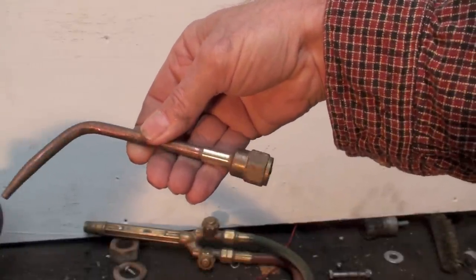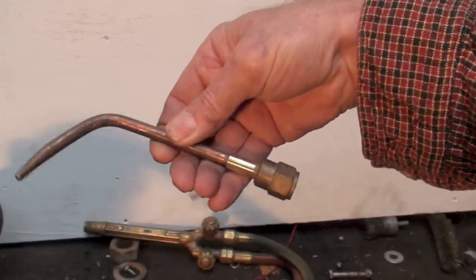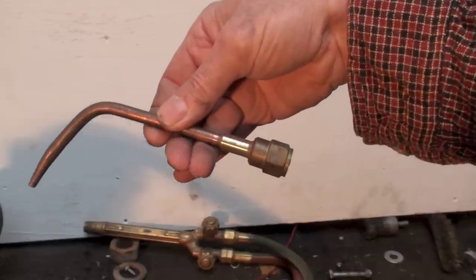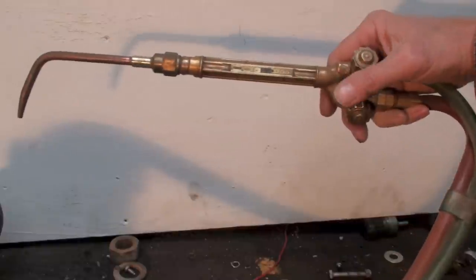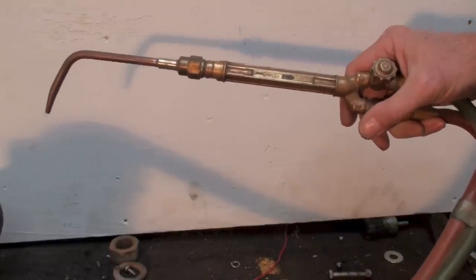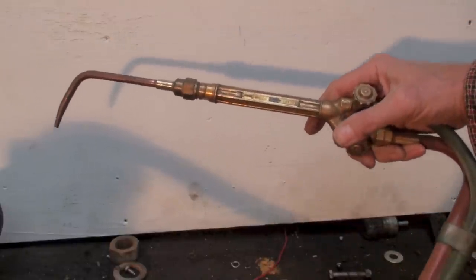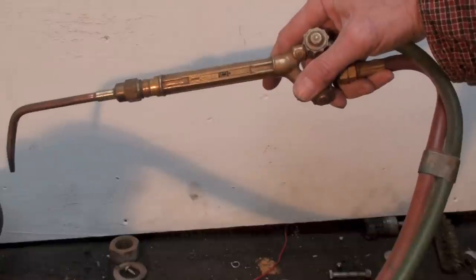Of course these are Victor numbers. There are others that have the same designations but you gotta figure out which is which. So anyway, that's the torch and the tips and of course setting up the gauge pressures. Next we'll go into the flame.